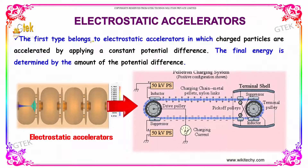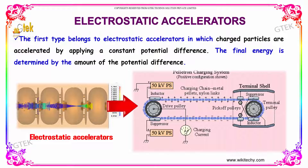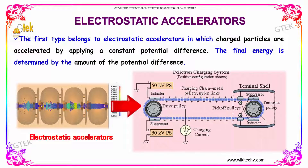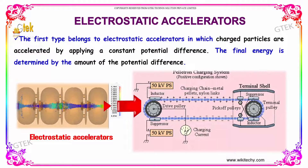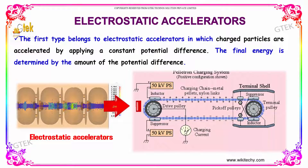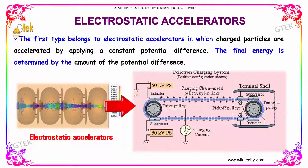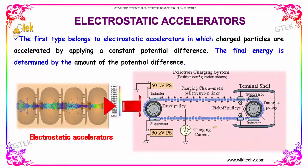The first type belongs to an electrostatic accelerator in which charged particles are accelerated by applying a constant potential difference. The final energy is determined by the amount of potential difference. Here is a typical example of electrostatic accelerators.